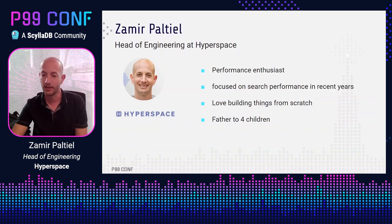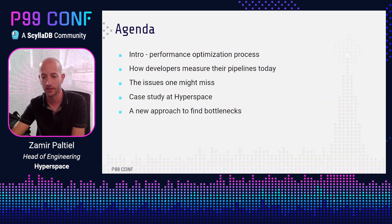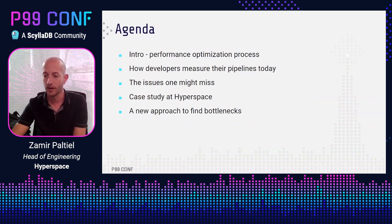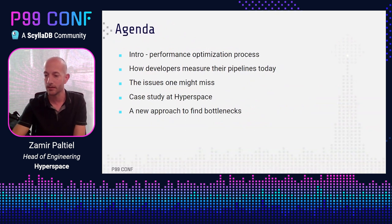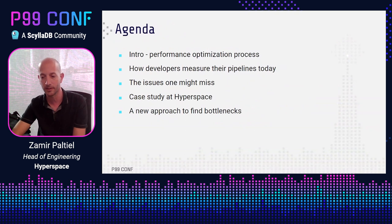Today we're going to talk about first the concept of the performance optimization process and how developers measure code speed today. Then we'll continue to issues one might miss, and I'll show you a use case that I tackled in my day-to-day work at Hyperspace and what we learned from it.